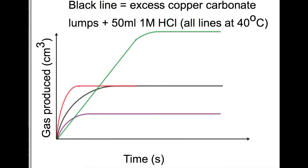So if we start by looking at the red line. The red line is steeper so it's faster but it finishes at the same point. This means that we still have 50 millilitres of 1M acid but this time we're using powdered copper carbonate.